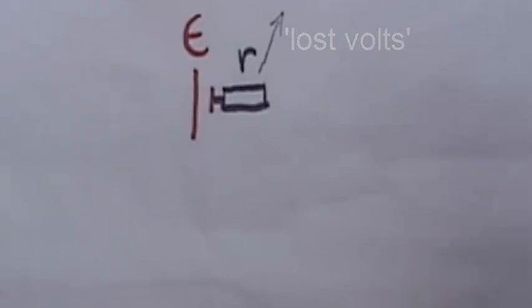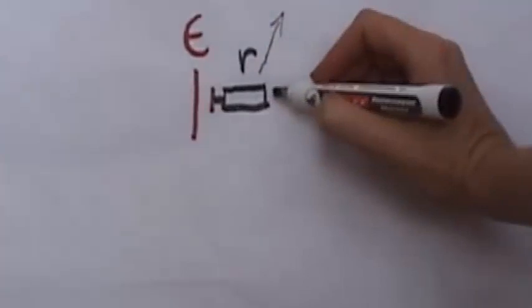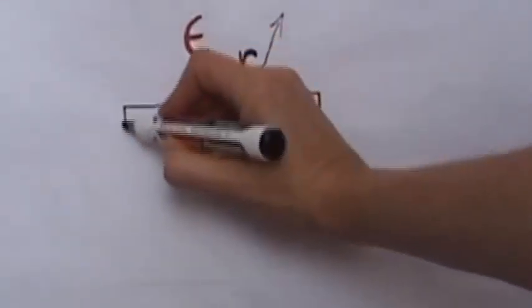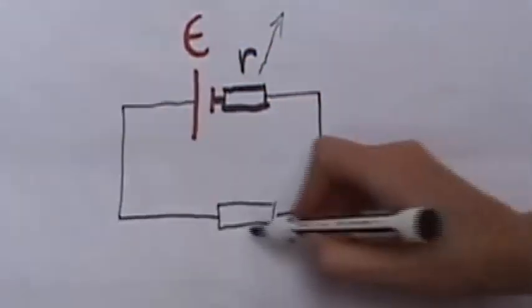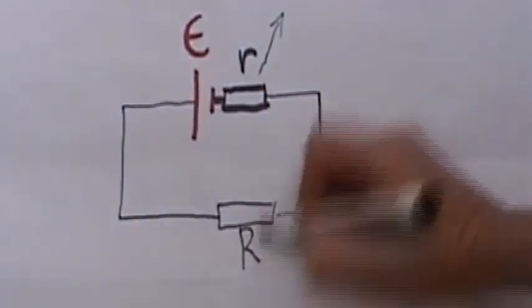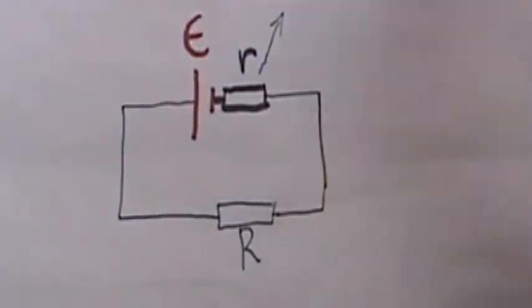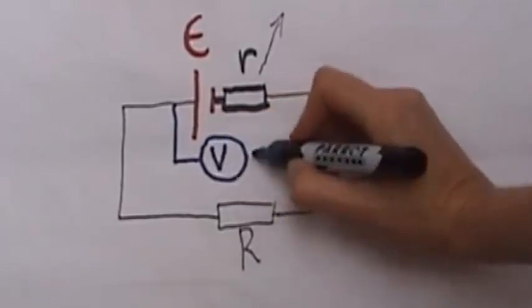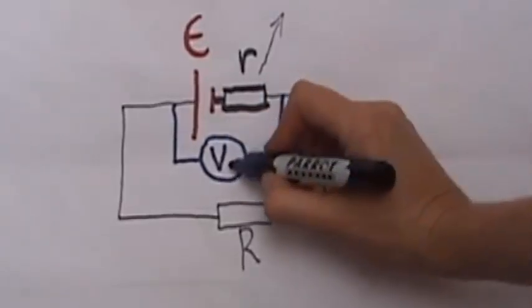So when the battery or cell is connected to an external circuit with resistance capital R and we now go and we measure the voltage across that battery or cell what we measure here is terminal potential difference V cells.